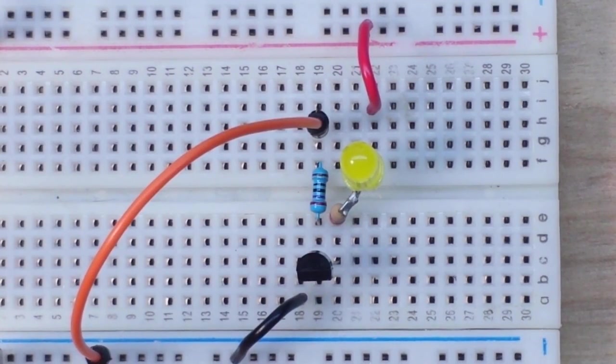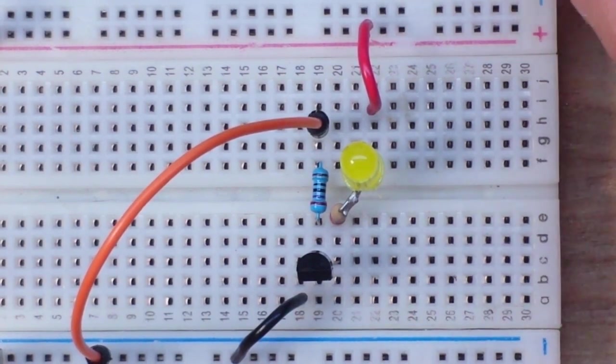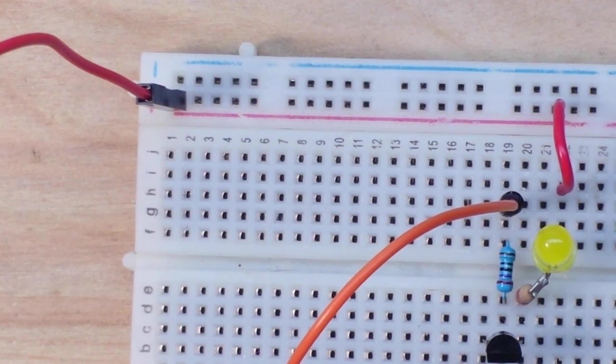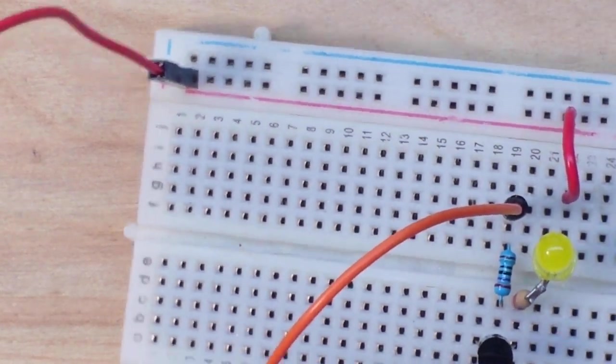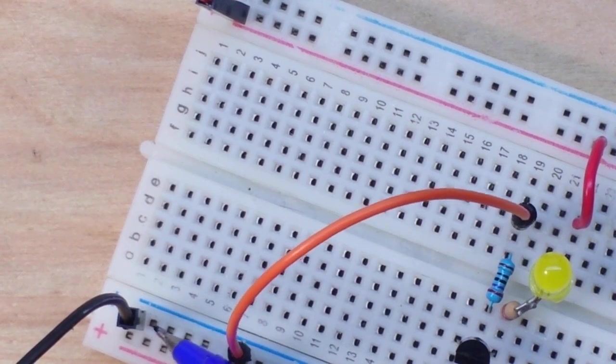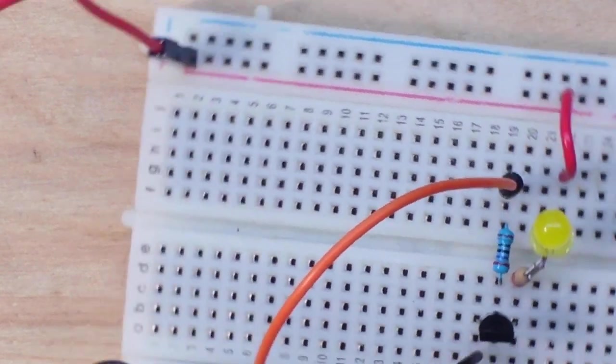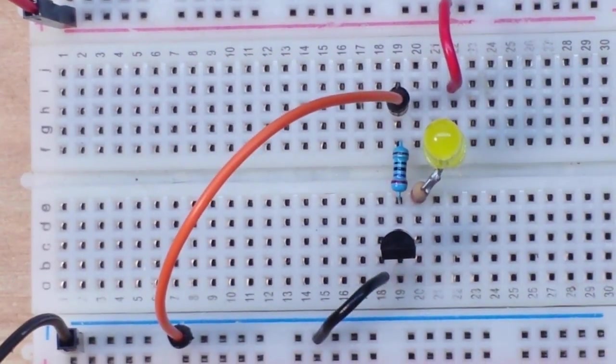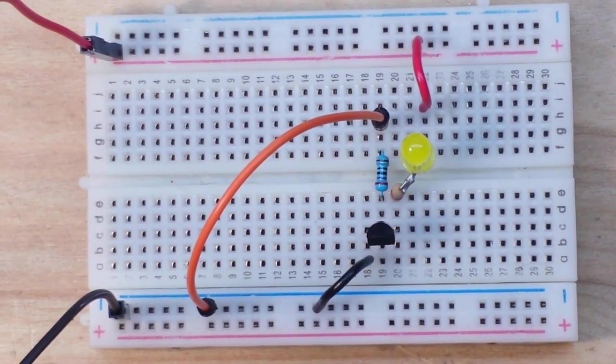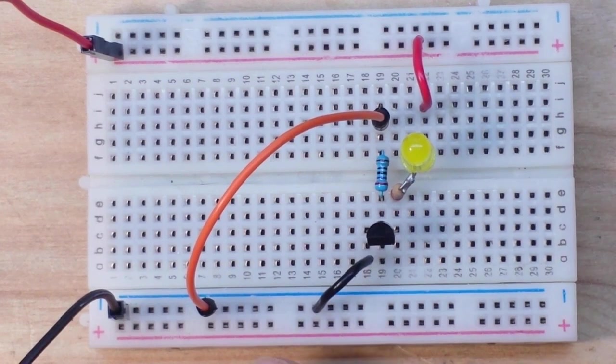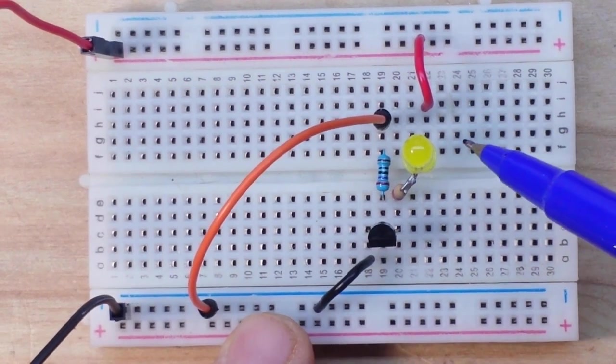Okay, I got you zoomed in way close here so you can see everything that's going on. So first of all, over here we have 5 volts flowing to the positive rail and we have our ground rail. Let me just zoom out a couple clicks here so you can see the whole thing.